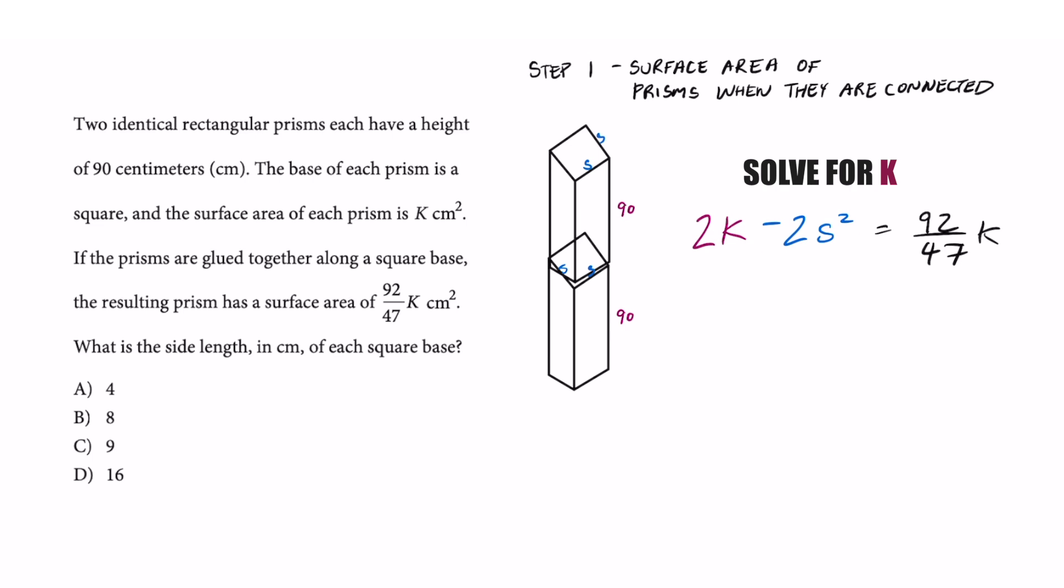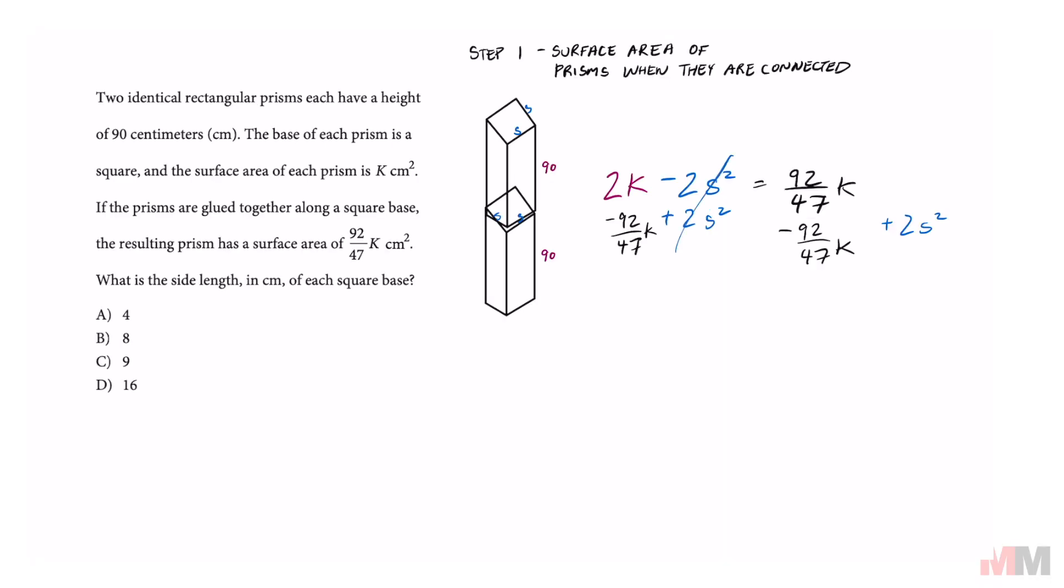From here, we got to solve for K. So let's bring this S term on the right side and bring the K term so it combines with that one. These are going to cancel out right here.